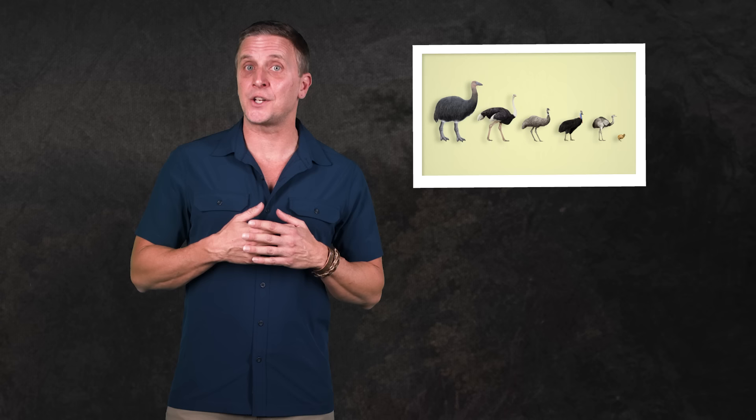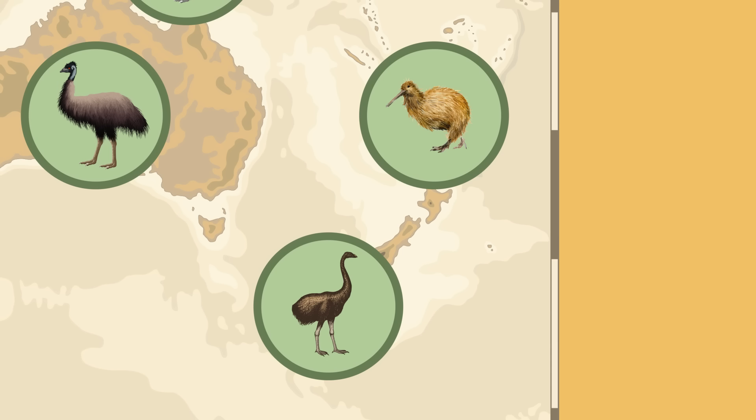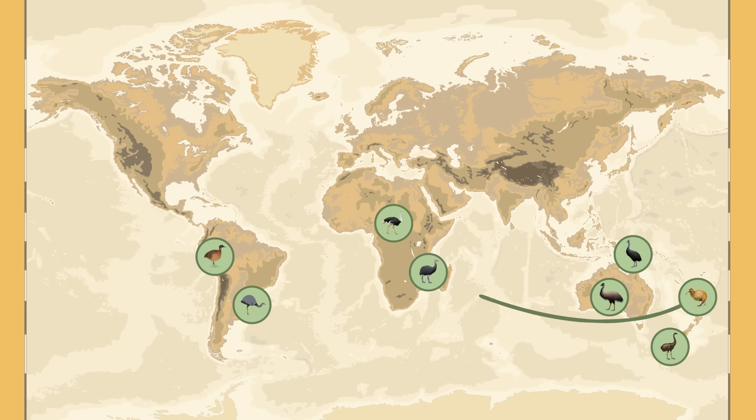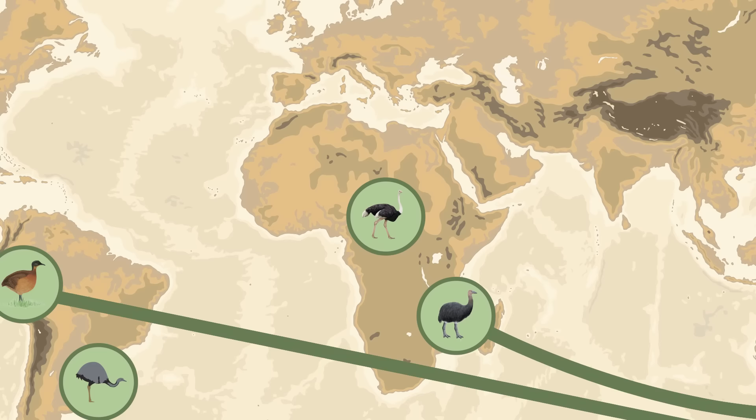But the tinamou is the only living ratite that can fly. A study in 2014 analyzed the DNA of modern ratites, as well as that of the extinct elephant bird and the moa. And the results showed that the relationships among these birds was very different from what we thought. It turned out that most ratite groups that lived on the same continent weren't closely related at all. So kiwis weren't closely related to moas, even though they both lived in New Zealand. Instead, kiwi DNA showed that they were closer to the elephant bird, which lived all the way over in Madagascar. And moas turned out to be more closely related to the tinamou in South America than they were to any other ratite.